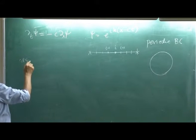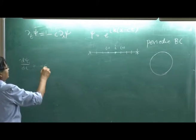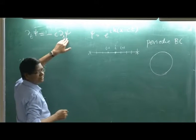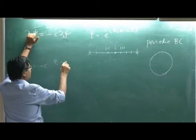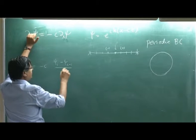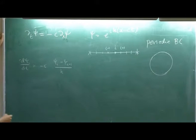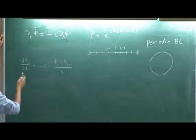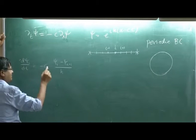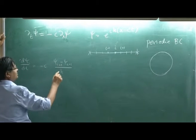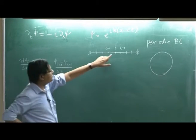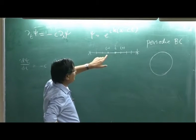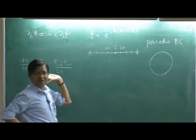So d psi i dt of c. Now I can use Euler scheme for this first order. Or let us make a better accurate scheme psi i plus 1 minus i by 2h. So this central difference. The derivative at this point is psi i plus 1 minus psi i minus 1 by 2h.